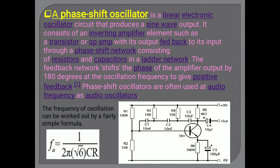The first type is the phase shift oscillator. This oscillator is a linear electronic oscillator circuit that produces a sine wave as an output. It consists of an inverting amplifier element such as a transistor or op-amp (operational amplifier), with its output fed back to its input through a phase shift network consisting of resistors and capacitors in a ladder network. The feedback network shifts the phase of the amplifier output by 180 degrees at the oscillation frequency to give positive feedback, and therefore it is used as an audio frequency oscillator.